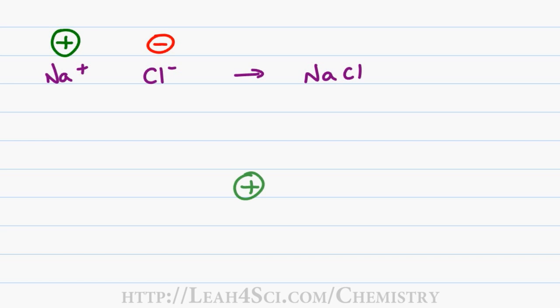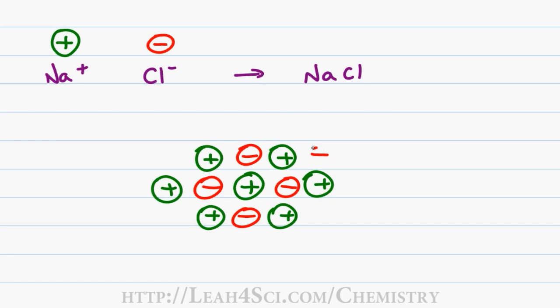The way this attraction works is the positive sodium will attract negative chlorides to balance its charge. Notice that I didn't show one, I'm showing a lot of negatives coming towards that chlorine. But then when I have all these negatives, more positive ions will come to balance the negative charge. And then more negatives will come to balance the positive charge.